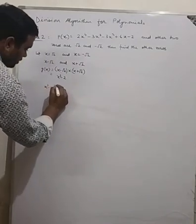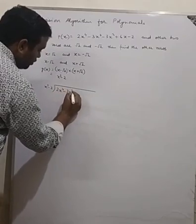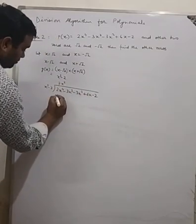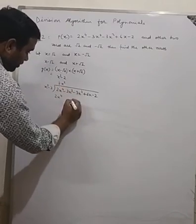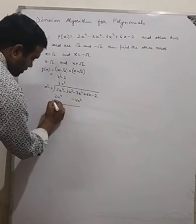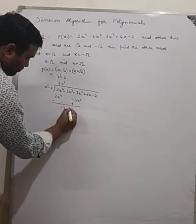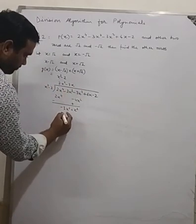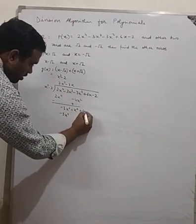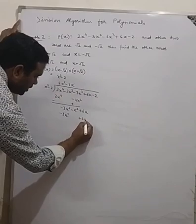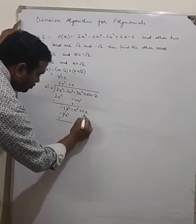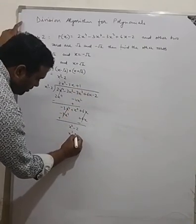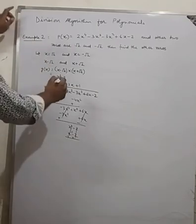Dividing 2x⁴ − 3x³ − 3x² + 6x − 2 by x² − 2: it goes 2x² times, giving 2x⁴ − 4x². Subtracting gives −3x³ + x². Then it goes −3x times, giving −3x³ + 6x. Subtracting cancels those terms, leaving x² − 2. This goes +1 time, giving x² − 2. Subtracting cancels completely. So Q(x) is 2x² − 3x + 1.